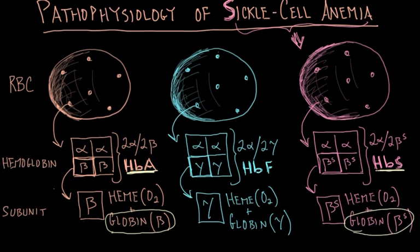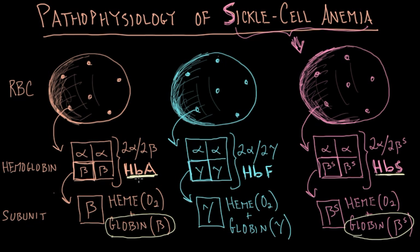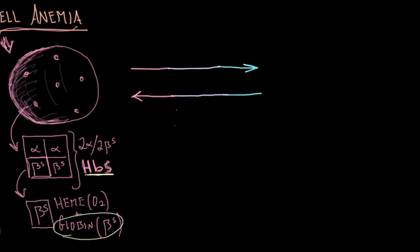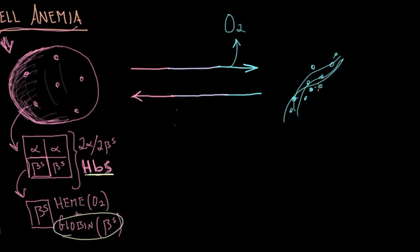The only difference between hemoglobin type A and hemoglobin type S is that single amino acid in the sixth position, which is the result of a point mutation. So the question is: what's the big deal? How does hemoglobin type S contribute to the disease process? When hemoglobin type S is deoxygenated — when it drops off oxygen in tissues — it tends to polymerize, forming long needle-like structures.